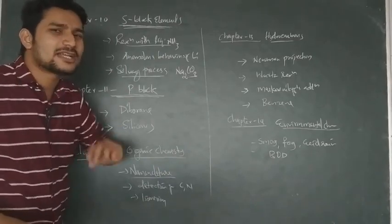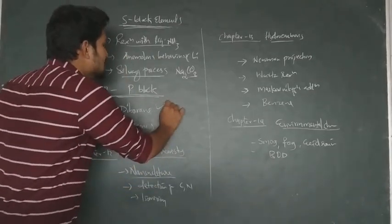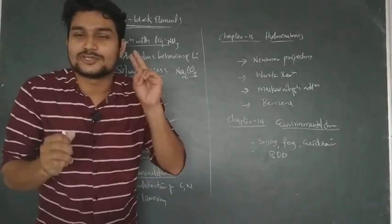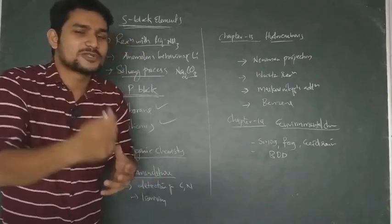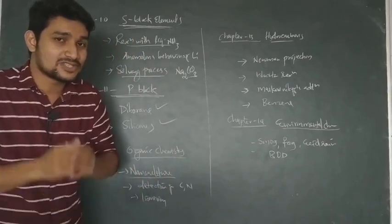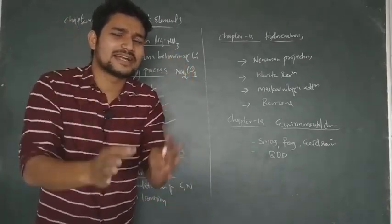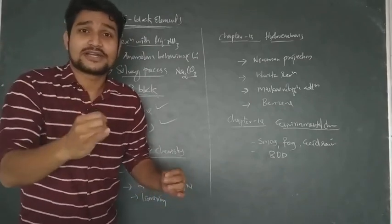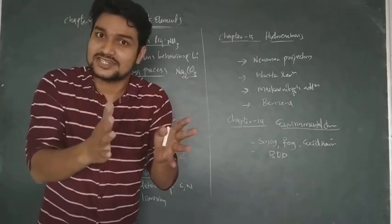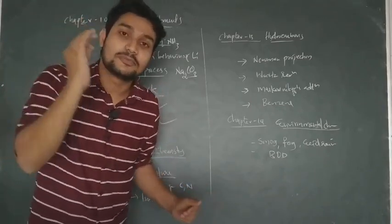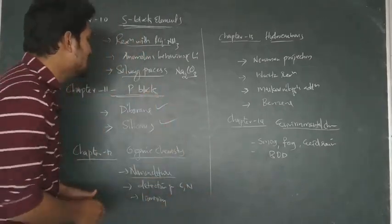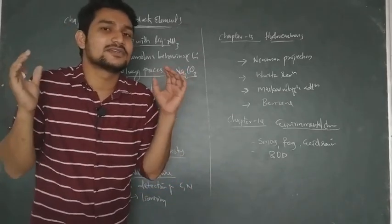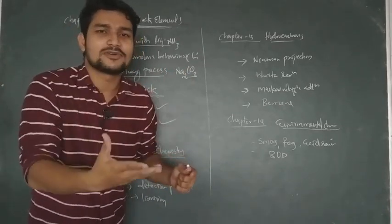For the P-block elements, you will need to study diborane and silicones. Diborane — how it is prepared — and silicones — what are their types. These are important topics in the P-block chapter.